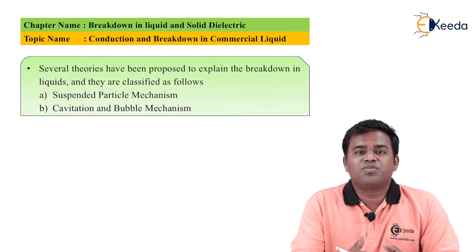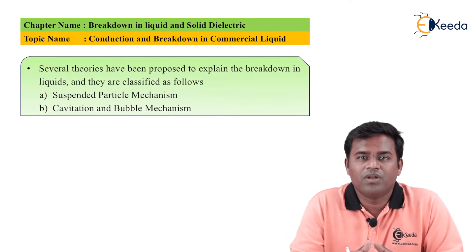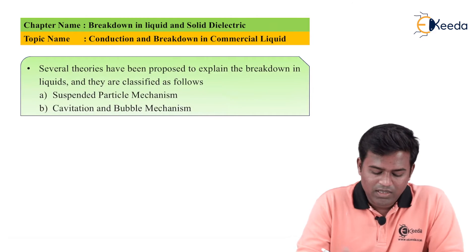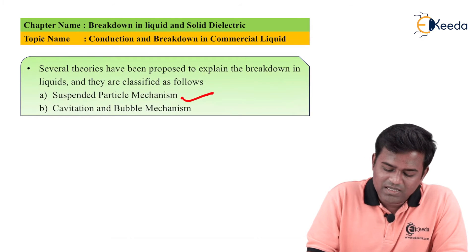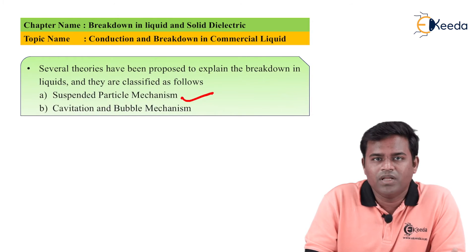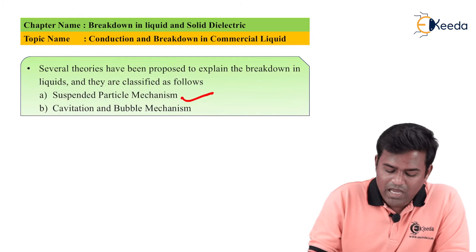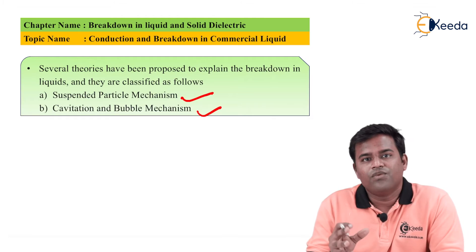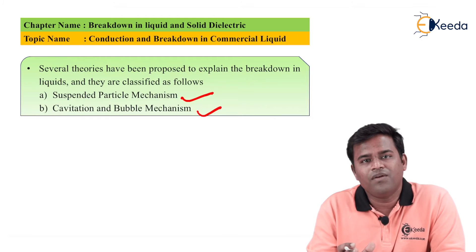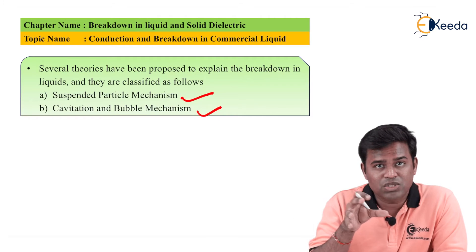To explain the conduction and breakdown phenomenon in commercial liquid, two theories were proposed: the first is the suspended particle mechanism, which is related to small spherical solid particles in the commercial liquid; the second is the cavitation and bubble mechanism, which relates to gas pockets formed in a commercial liquid.